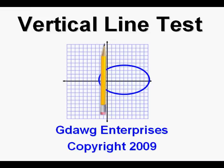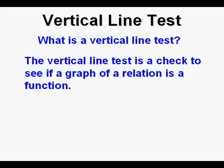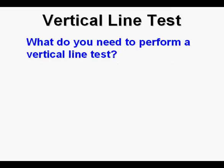Vertical line test. What is a vertical line test? The vertical line test is a check to see if a graph or a relation is a function. What do you need to perform a vertical line test? You'll need a graph.